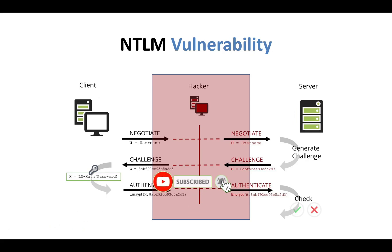The vulnerability takes place when a hacker sits between the client and server. The hacker sets up a bogus NTLM client and server. When the client sends its hello negotiation message with its username, the hacker's NTLM server reads the username and forwards it to the genuine server, which replies with a challenge ID to the hacker's bogus client.